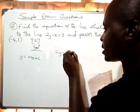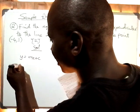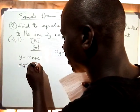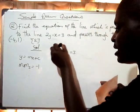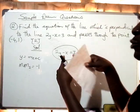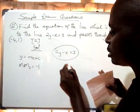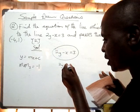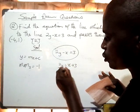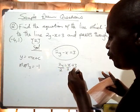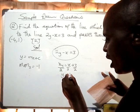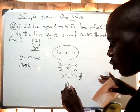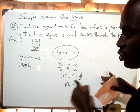This equation is perpendicular to the line 2y minus x equals 3. We learned that the gradients of two perpendicular lines, when multiplied, give a product of negative 1. To find the gradient, we rearrange: 2y equals x plus 3, divide by 2, giving y equals one-half x plus three-halves. So the gradient m1 is one-half.